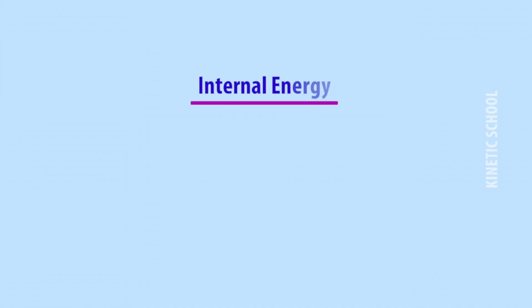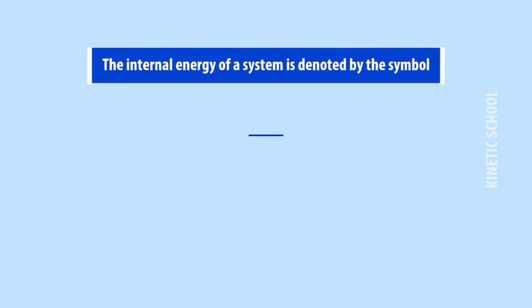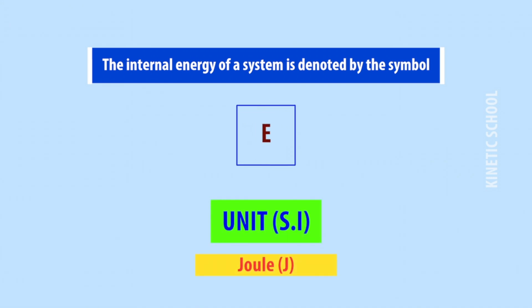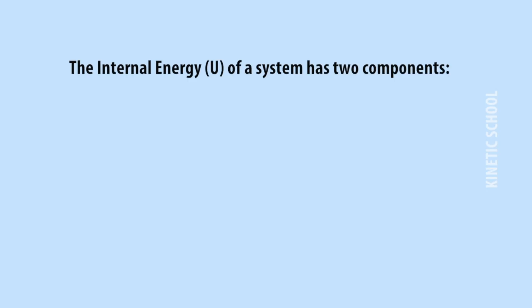The sum of all the microscopic forms of energy is called the internal energy of a system. The internal energy of a system is denoted by the symbol U or E, and the SI unit is Joule. The term internal energy and its symbol U first appeared in the works of Rudolf Clausius and William Rankine in the second half of the 19th century.